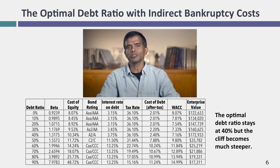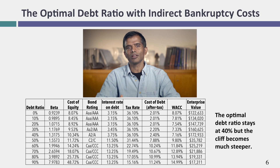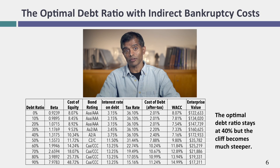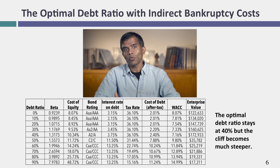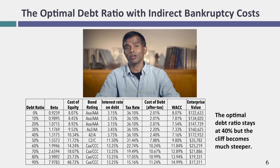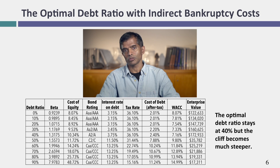The optimal debt ratio remains at 40% even including enhanced bankruptcy costs, because Disney's rating is still single-A at 40% debt. But here's what indirect bankruptcy costs do to the analysis: remember that inflection point where cost of capital started going up after 40%? Now it gets even more dangerous, because once you cross that inflection point, not only does cost of capital go up, but operating income starts to collapse. So you might want to stop at 35% debt.